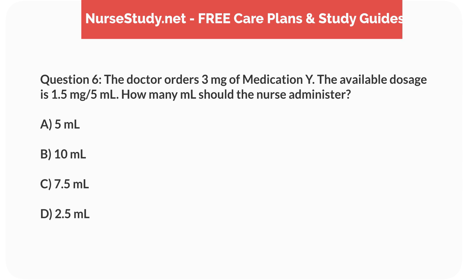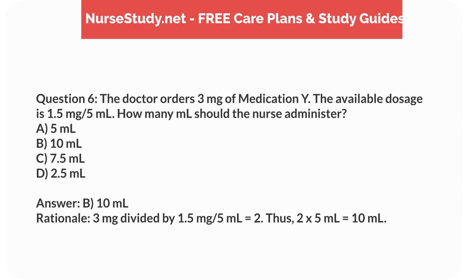Question 6. The doctor orders 3mg of medication. The available dosage is 1.5mg per 5mL. How many mL should the nurse administer? a. 5mL, b. 10mL, c. 7.5mL, d. 2.5mL. Answer: b. 10mL. Rationale: 3mg divided by 1.5mg per 5mL equals 2. Thus, 2 times 5mL equals 10mL.